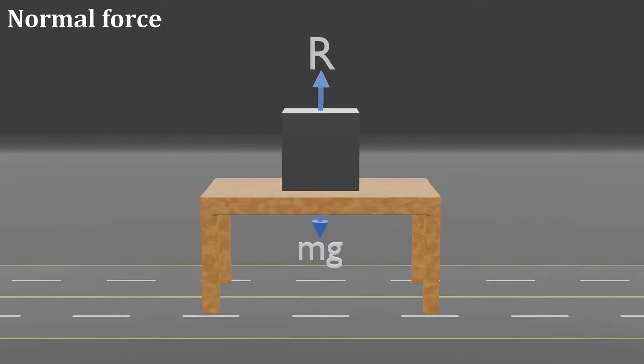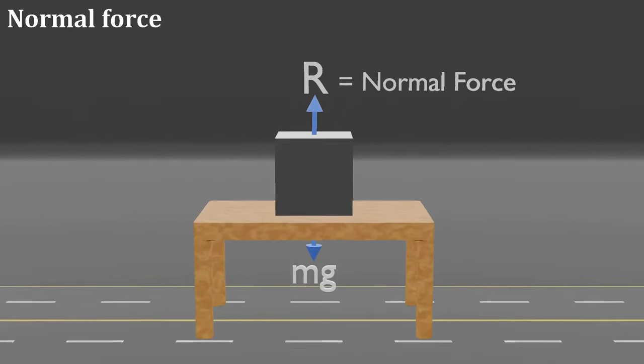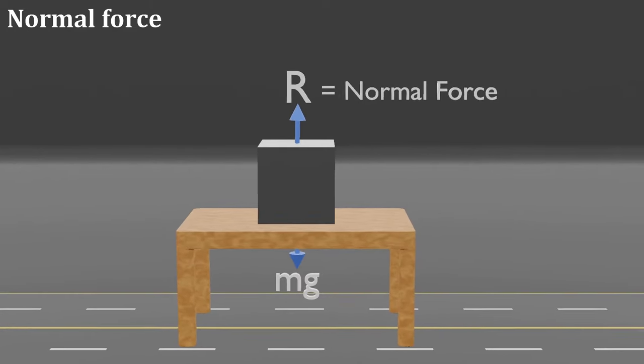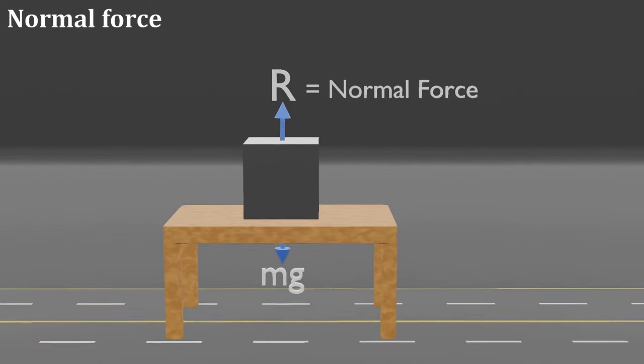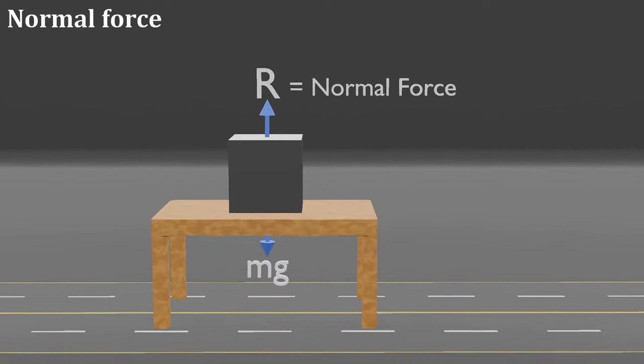Due to this opposite reaction, a force develops normal to the surface and is known as normal force. This normal force remains as long as the metal block is in contact with the table.